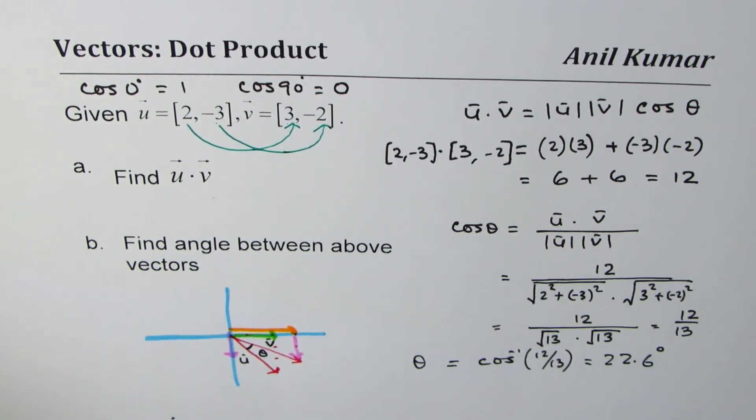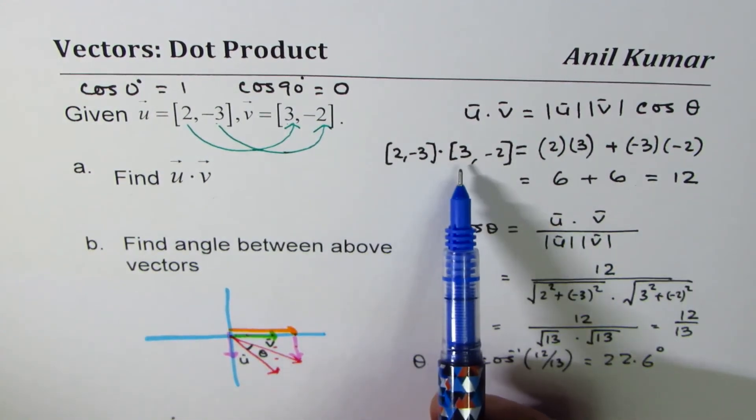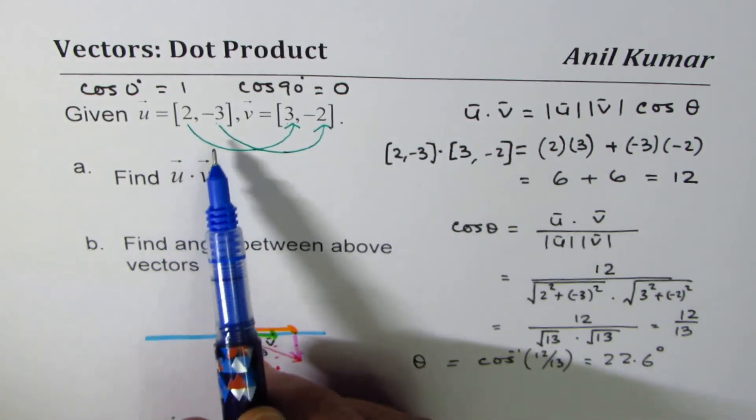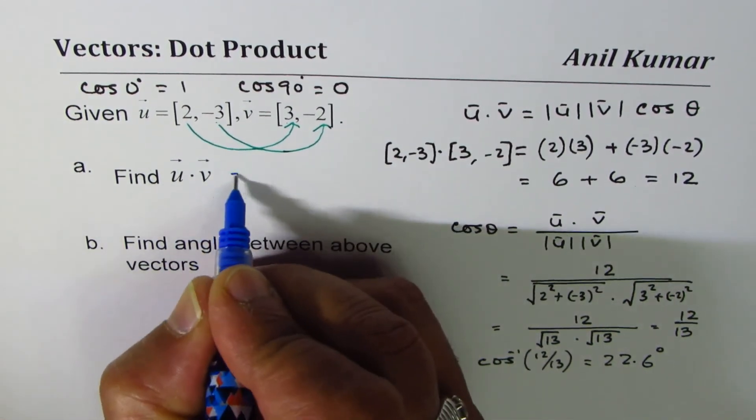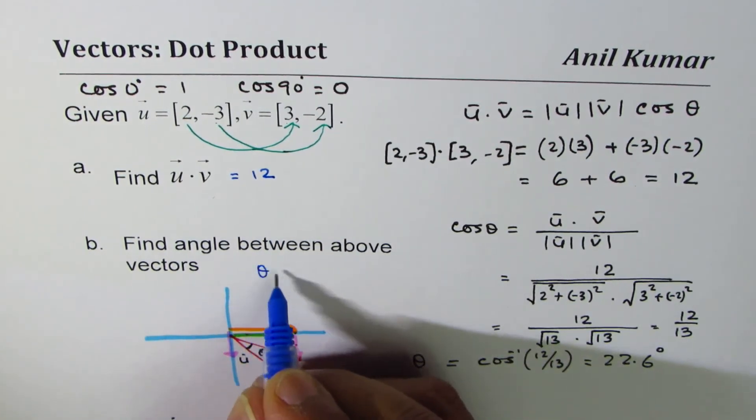So that is our answer. The angle between these two vectors is 22.6 degrees. That is how you find the angle, and I hope you have also understood why in dot products we just multiply the same component (x components together) and add to the product of y components. If it were 3D, z components would be added. So the answer for first one is 12, and for the second one theta is 22.6 degrees.